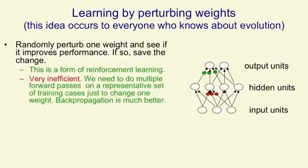The problem is it's very inefficient. Just to decide whether to change one weight, we need to do multiple forward passes on a representative set of training cases. We have to see if changing that weight improves things, and you can't judge that by one training case alone. Relative to this method, backpropagation is much more efficient — actually more efficient by a factor of the number of weights in the network, which could be millions.